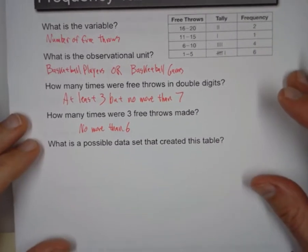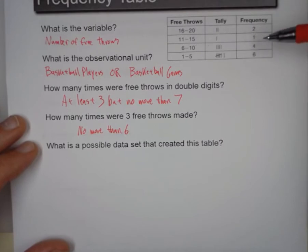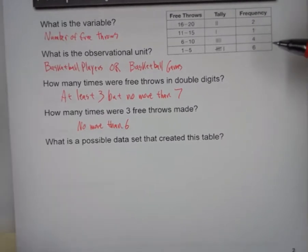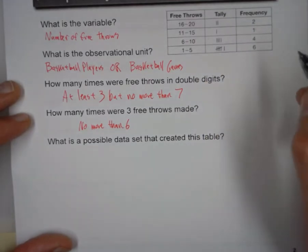So the next one: What is a possible data set that created this table? So now we're going to take this and say, what could have been the data? Now we say what could have been because we don't know. These 6 numbers from 1 to 5, we don't know what they are.